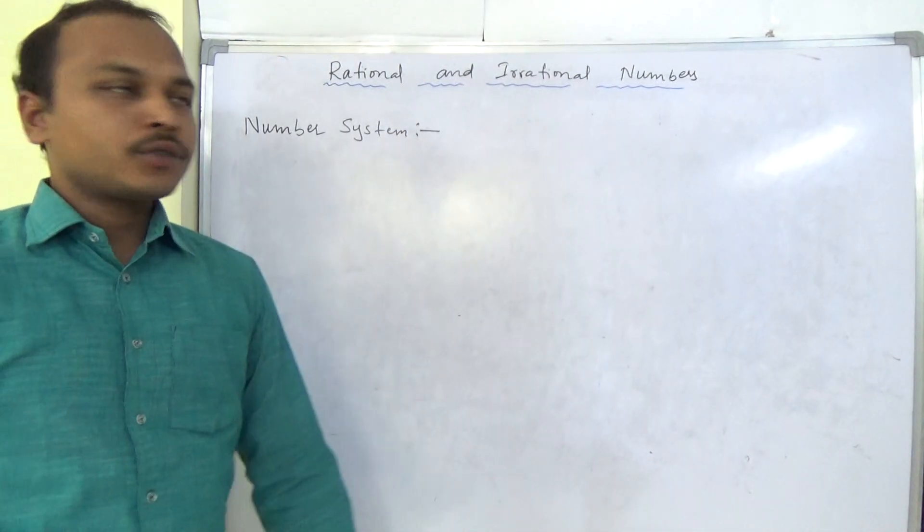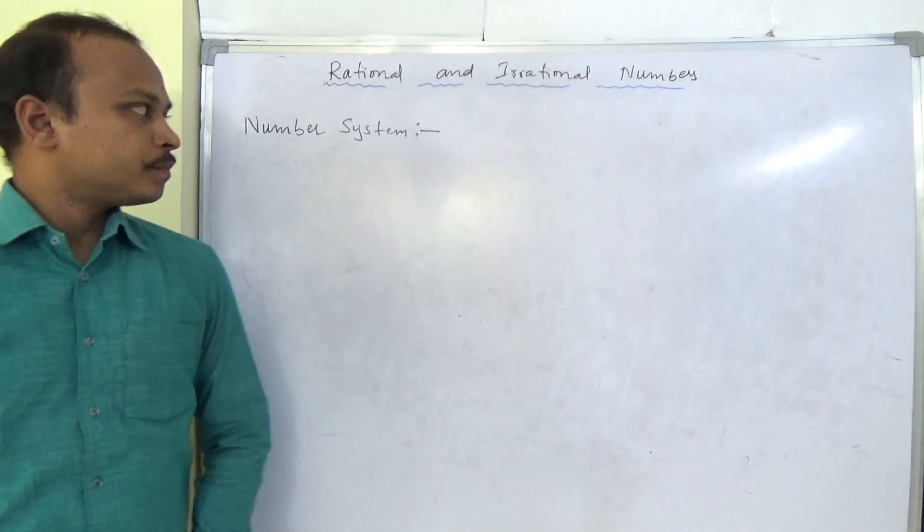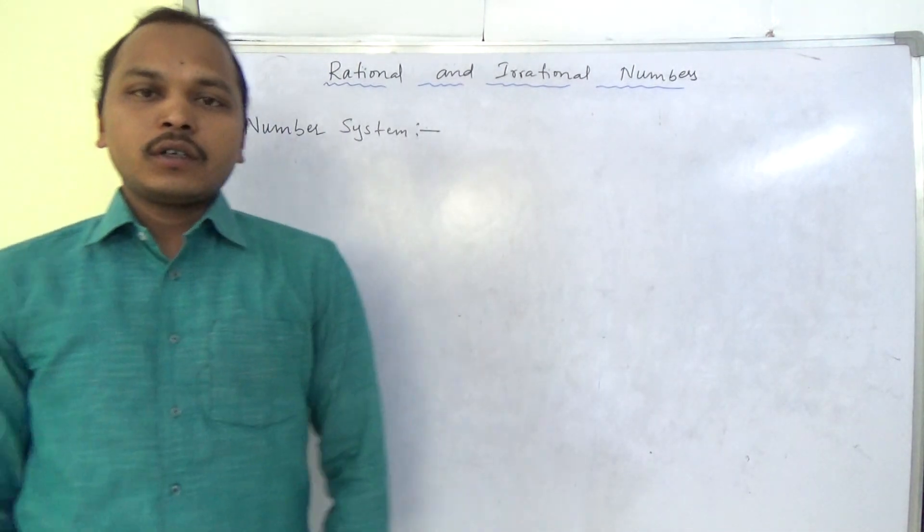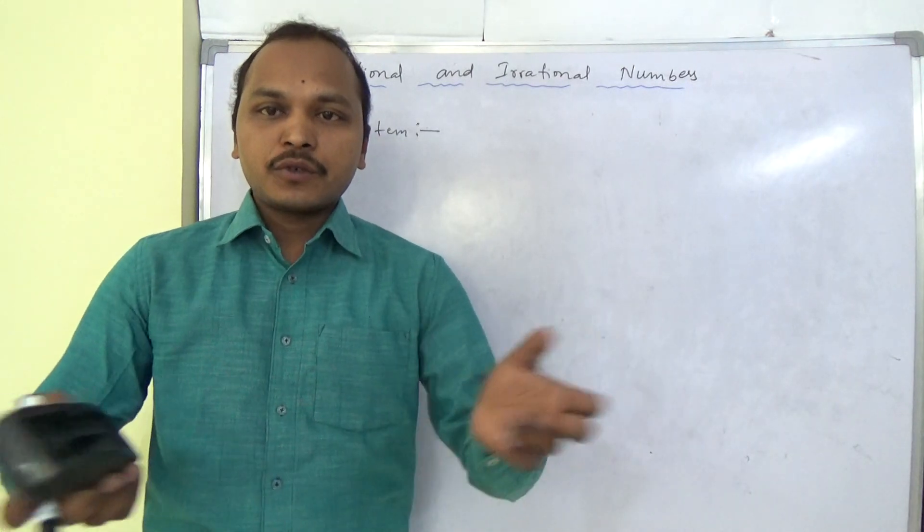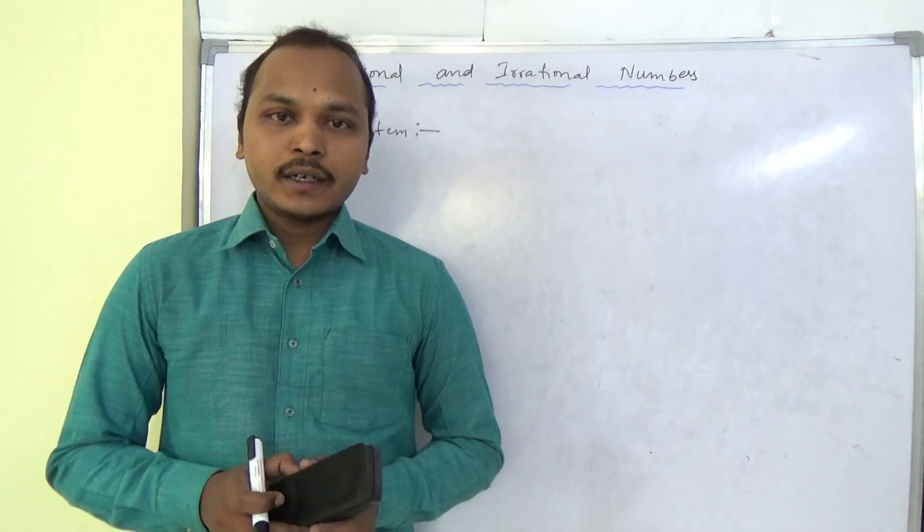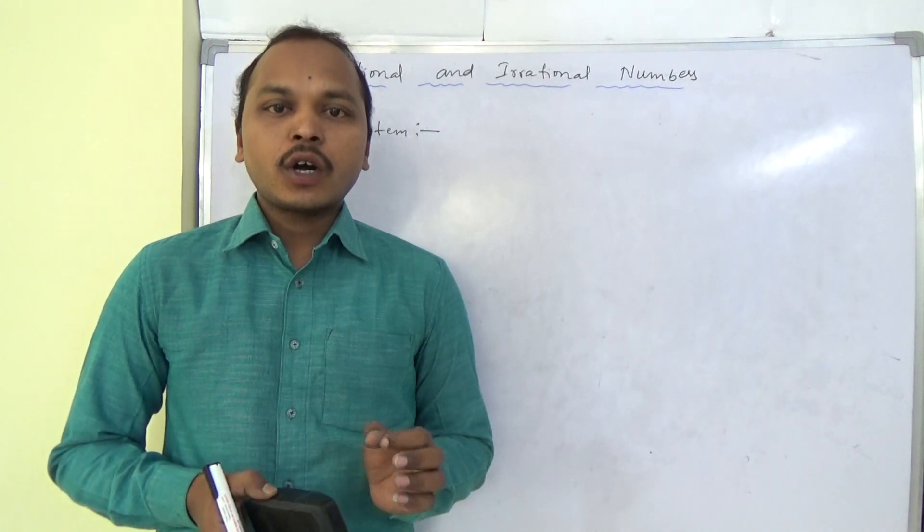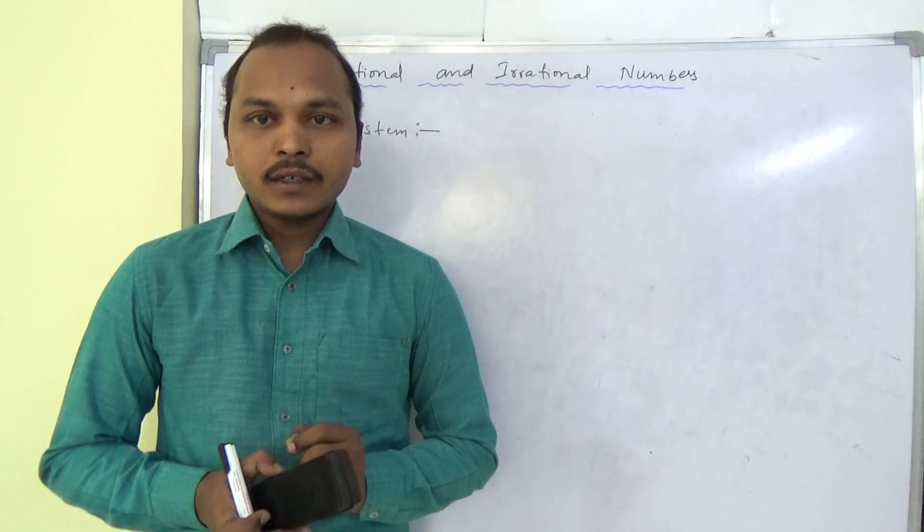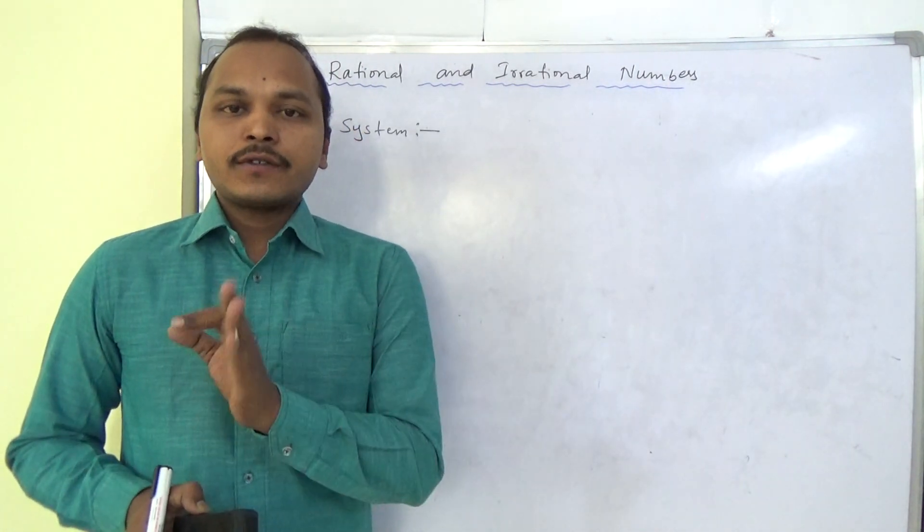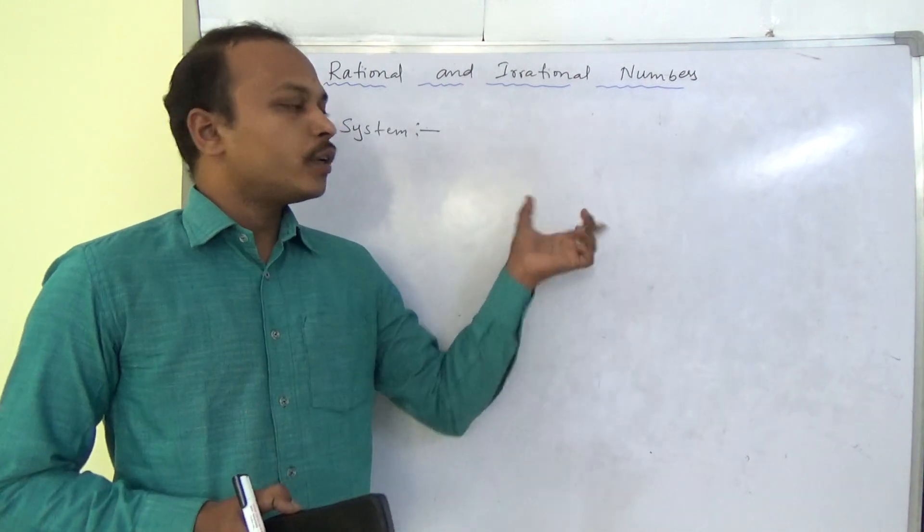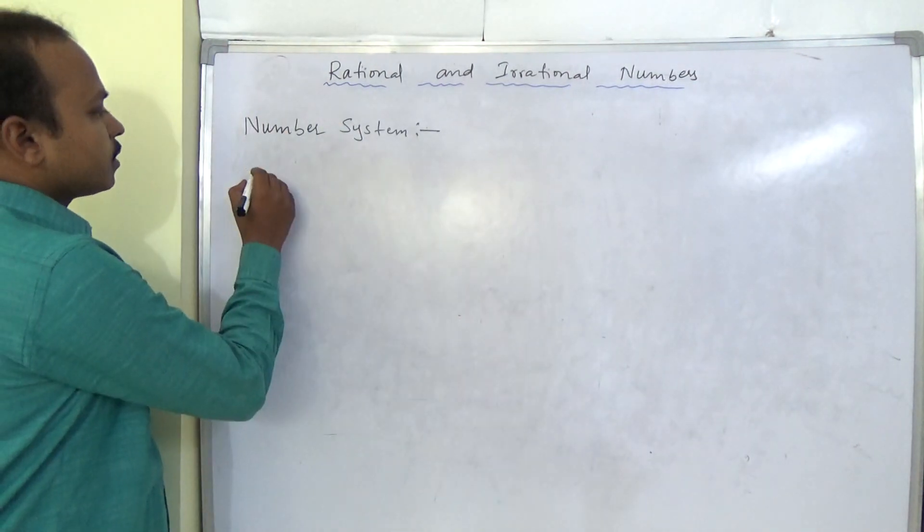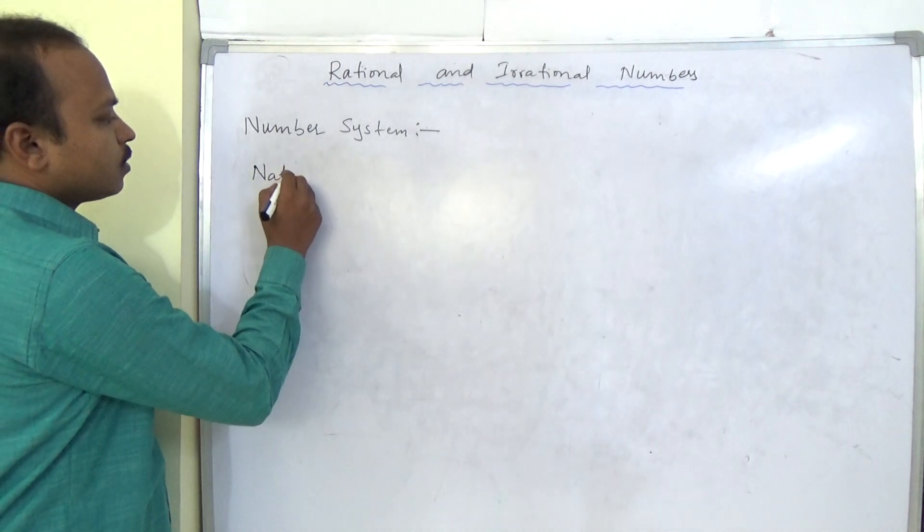Then we will proceed to the chapter. When you are looking at number systems, for example, if you want to count number of students in your class or number of books in your bag, what should you do? You have to count. With what number will you start? One, right? So counting numbers all start from one. Counting numbers are known as natural numbers. In number systems, the first system is natural numbers.